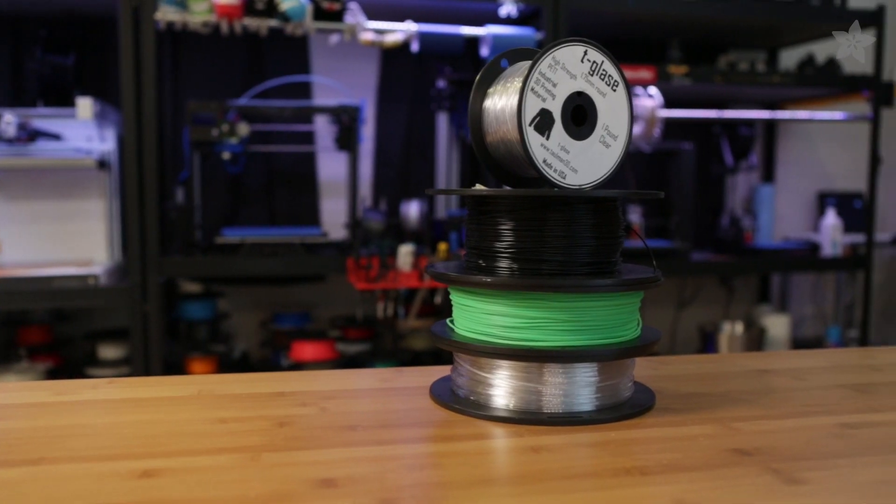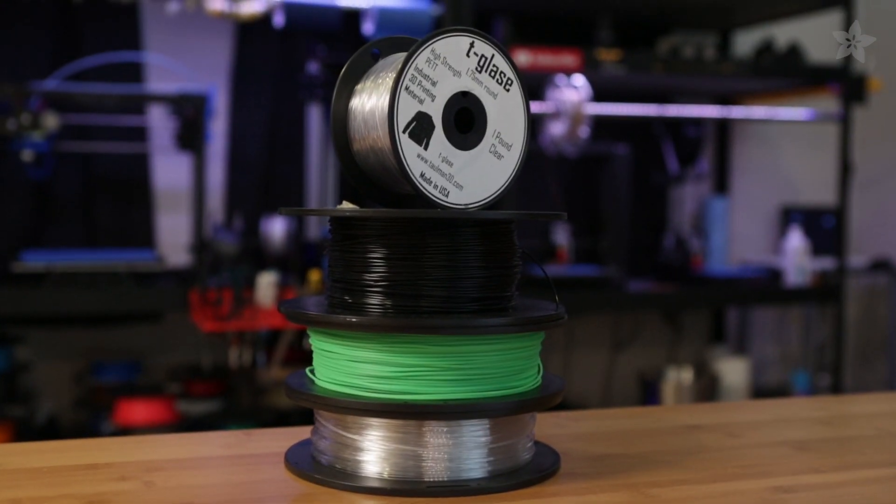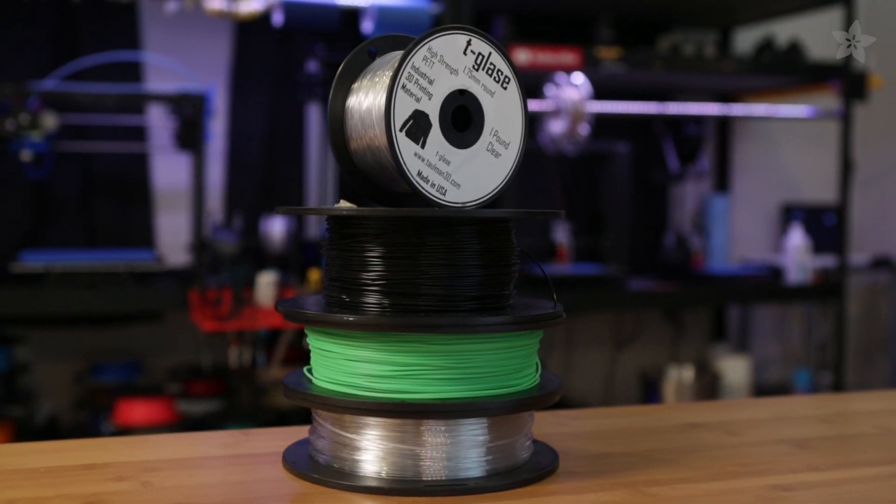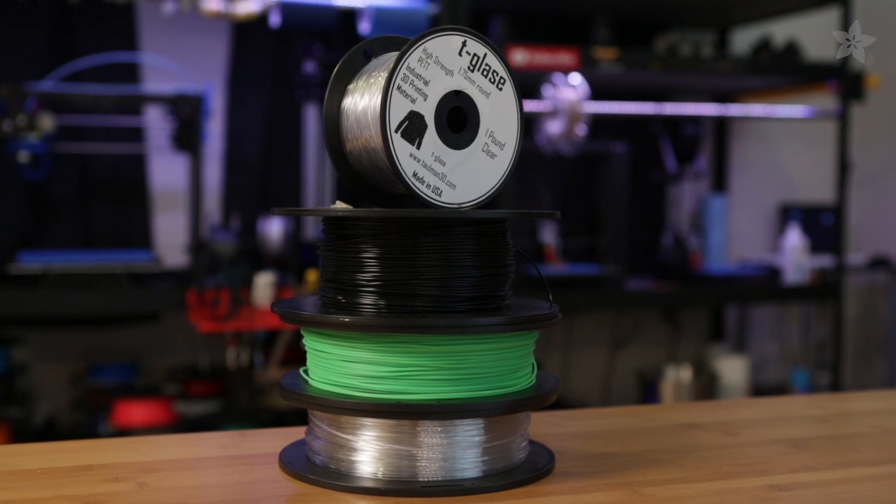Okay, so this week we're 3D printing drone prop guards and we thought it'd be a really nice way to test out some high-strength materials. You guys know there's a lot of different materials out there, so we thought we'd try a few of them and just see how they perform. So here we have ABS, carbon fiber, XT copolyester, and tea glaze. They're all different types of material, but they're all high-strength materials.